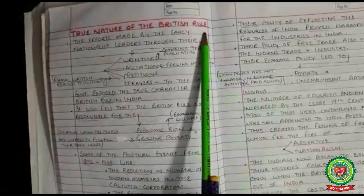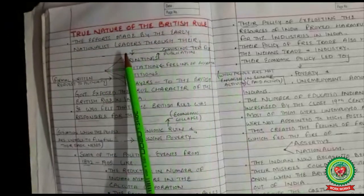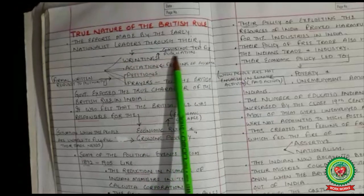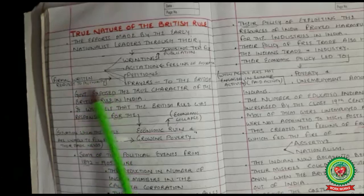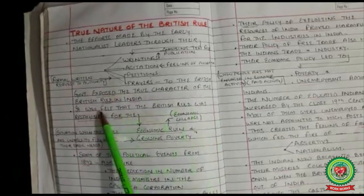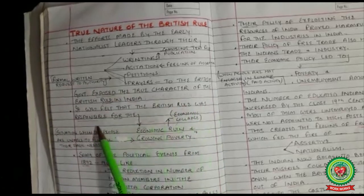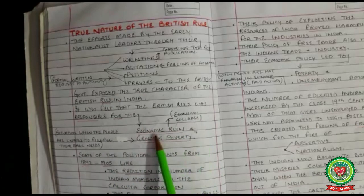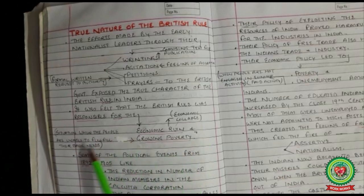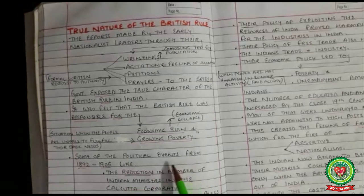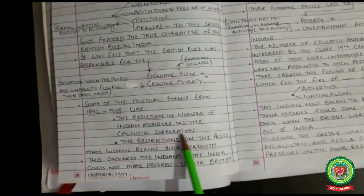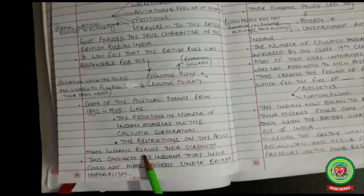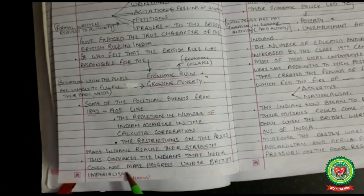The second cause was the true nature of the British rule. Efforts made by early nationalist leaders through their writings, agitations, petitions, and prayer exposed the true nature of the British rule in India. It was felt that British rule was responsible for economic ruin and growing poverty. Political events from 1892 to 1905, like reduction in Indian members in the Calcutta Corporation and restrictions on the press, made Indians realize their strength and convinced them that India could not make progress under British imperialism.